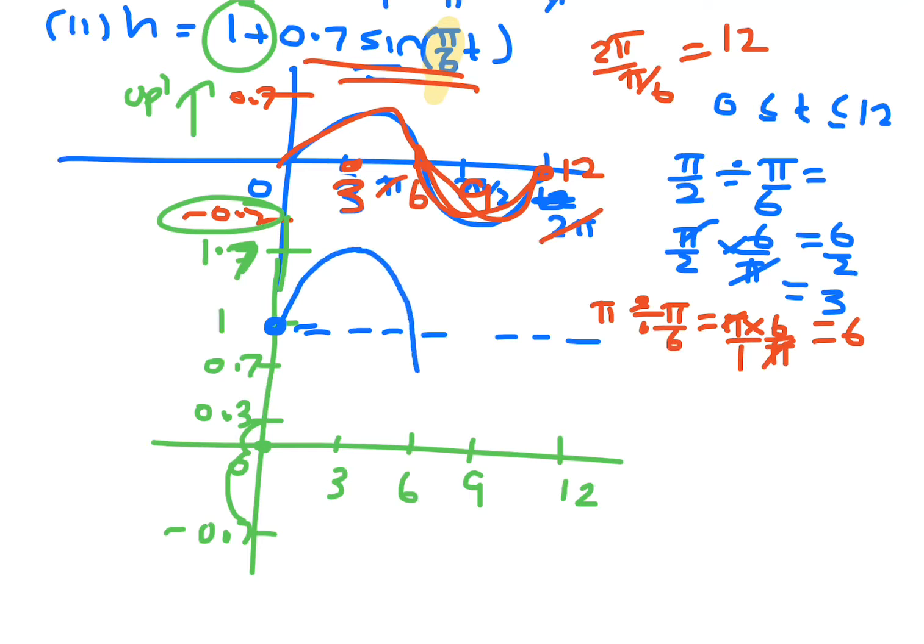So it goes up 0.7 there, comes down to 0.3, and then it goes back up to 0.7, when it hits 12. So that's basically one period.